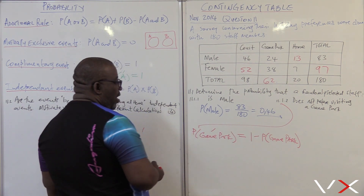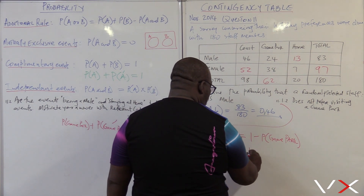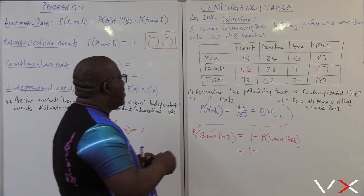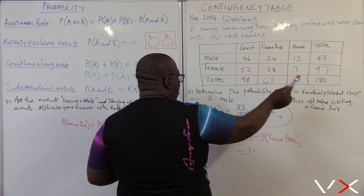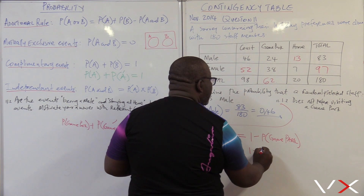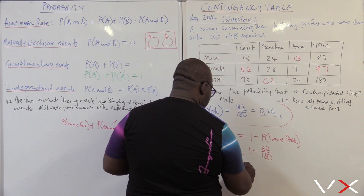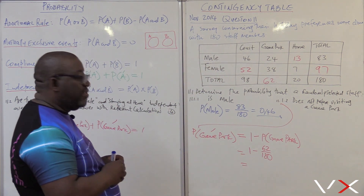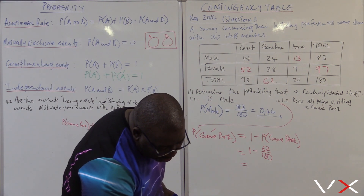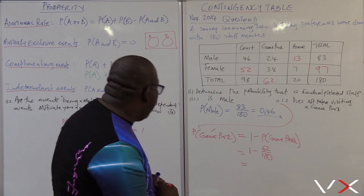This is what we're looking for, so we need to work on that. The probability of not visiting a game park equals 1 minus the probability of visiting a game park. The game park total is 62 over the super total of 180. So it will be 1 minus 62 over 180. The probability of not visiting a game park is therefore 1 minus 62 over 180, which gives us 0.66.